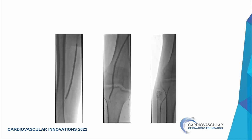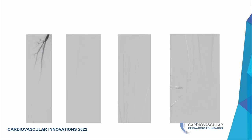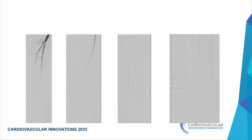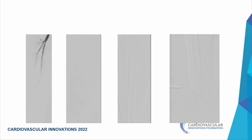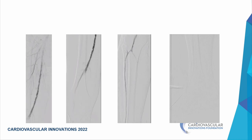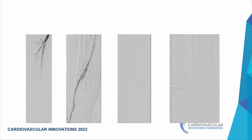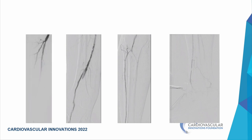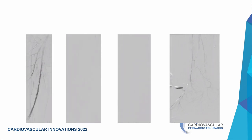We ballooned the SFA, popliteal, and AT levels. Throughout the procedure there was no pain and no complication. Post-balloon images showed what appeared to be a bypass graft — the third panel revealed a distal SFA to AT bypass, something I had never seen before. The AT looked acceptable though there was a dissection at the popliteal level within the SVG and some dissection near the AT.